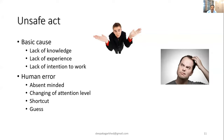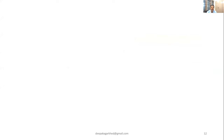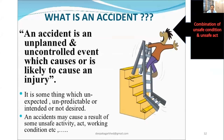Unsafe condition and unsafe act are the two major combinations that result in an accident. When an unsafe condition exists and an unsafe act is performed simultaneously, the accident is going to happen.